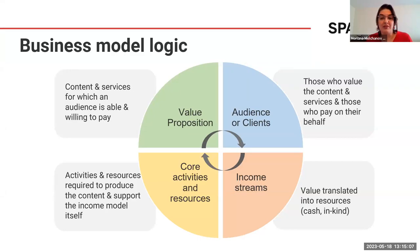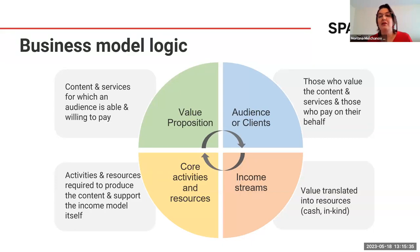Next, you have the audience itself — the clients — those who value the content and services, and those who pay on their behalf. For example, libraries pay publishers on behalf of faculty and students. You may have different audiences or segments, each with different requirements, and payments are not limited to financial transactions — authors, for example, pay with their creative work. Those payments become the income streams of the business, where the value proposition gets translated into resources — monetary or in-kind. You can have subscriptions, various fees, advertisement, grants, subsidies, licenses, etc.